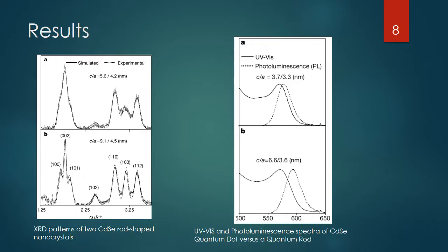Here are more spectra used to better characterize the nanorods. The first on the left is an X-ray diffraction of two cadmium selenide rod-shaped samples they were able to synthesize. In the top one the aspect ratio is very close to one, compared to the second one where it's almost two.